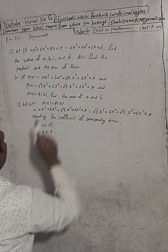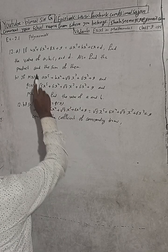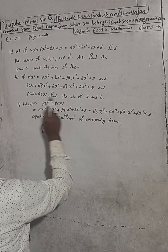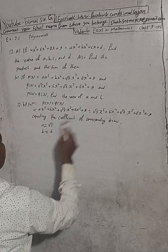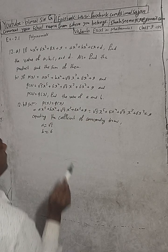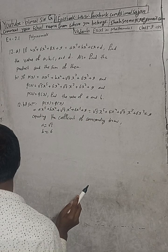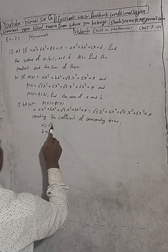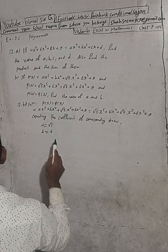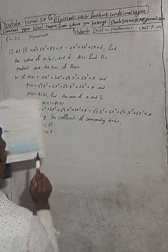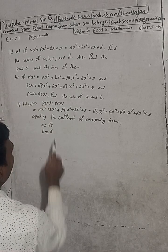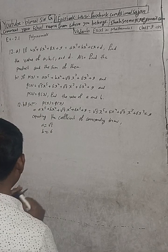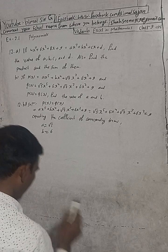We were asked to find the values of a and b. We have found: a = √5 and b = 6. This is our solution for part b.